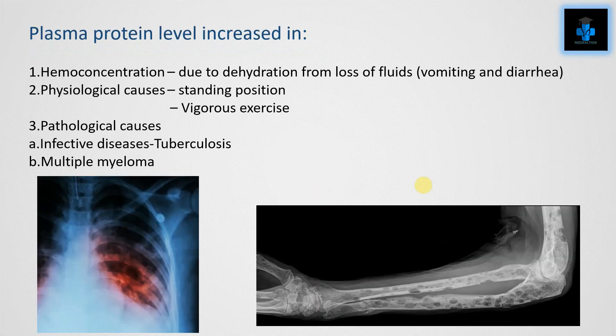Plasma protein levels are increased in conditions such as hemoconcentration due to dehydration from loss of fluids such as in vomiting and diarrhea. Physiological causes may include standing position and vigorous exercise. Pathological causes may be due to infectious diseases such as tuberculosis or in multiple myeloma conditions.